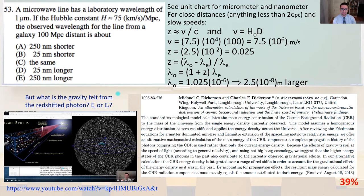And lambda observed is therefore also going to equal the quantity 1 plus Z times lambda emitted. And lambda observed is going to equal 1.025 times 10 to the minus 6 meters. And that is 2.5 times 10 to the minus 8 meters larger than the emitted wavelength. And again, we're going to convert back to nanometers. That is 25 nanometers longer. That is answer D.